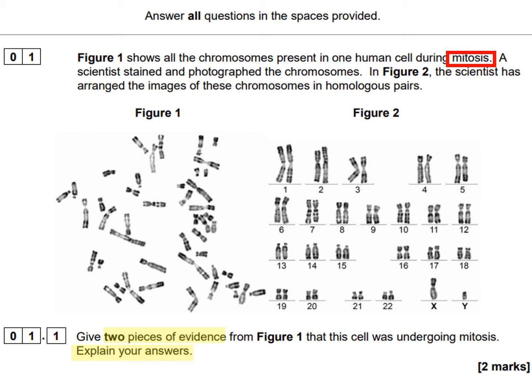Looking at figure one, we can see each of the chromosomes is a replicated chromosome, made of two identical molecules of DNA called sister chromatids, joined at the centromere. DNA replication occurs before mitosis, in interphase, but in interphase the DNA would be arranged as chromatin so you would not be able to see replicated chromosomes. The start of mitosis is prophase, when the chromatin super-coils so that the sister chromatids become shorter and thicker, making the chromosomes visible under an optical microscope with the correct staining.